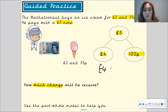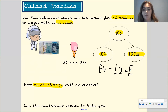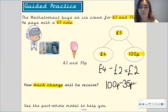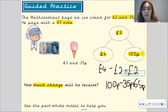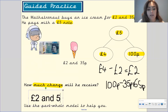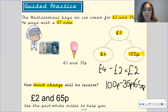Let's do four pounds take away two pounds — what does that equal? Pause the video to have a think. Well done if you said it equals two pounds. And now we need to do 100 pence take away 35 pence. Pause the video to work that out. Well done if you got 65 pence. So the change is two pounds and 65 pence. We used the part-whole model by partitioning the five pound note into pounds and pence.